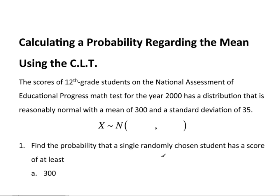Now that we've talked about the sampling distribution of the sample mean and the central limit theorem, let's go ahead and use this idea to find some probabilities. Here's an example: the scores of 12th grade students on the National Assessment of Educational Progress math test for the year 2000 has a distribution that is reasonably normal with a mean of 300 and a standard deviation of 35.